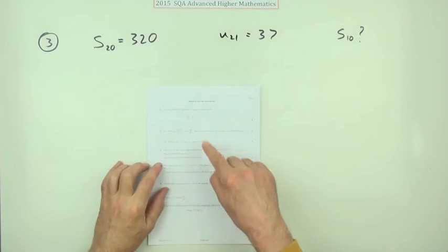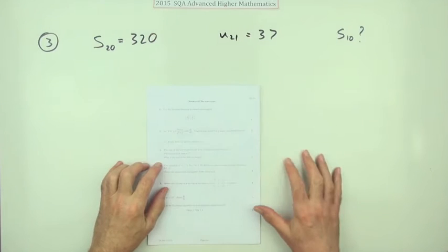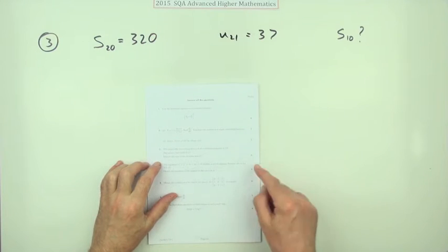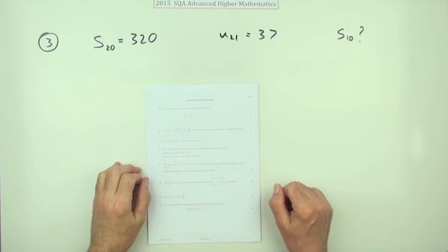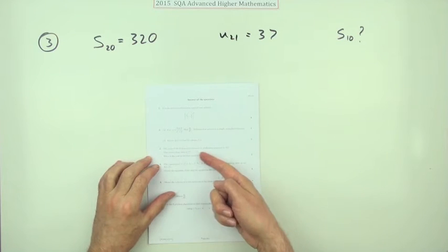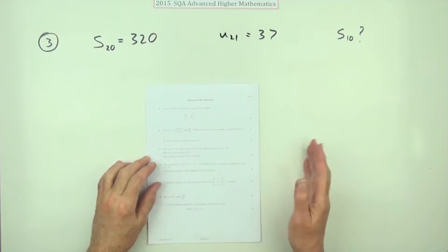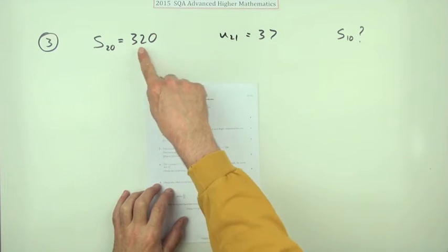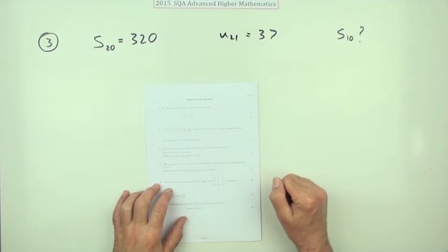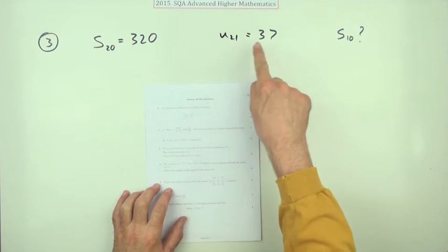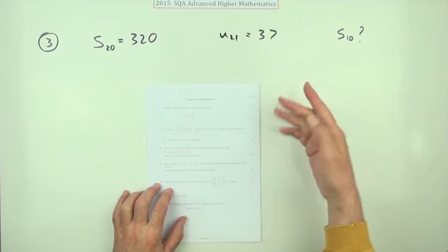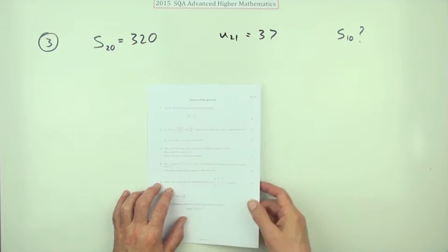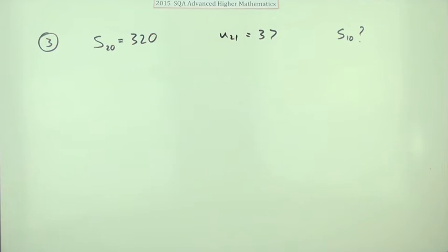Number three from the 2015 Advanced Higher Maths — five marks, arithmetic sequence. The problem states: the sum of the first 20 terms is 320, and the 21st term is 37. What is the sum of the first 10 terms? Five marks.